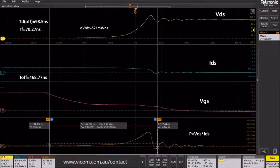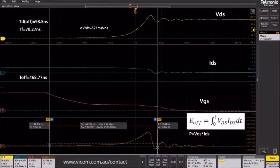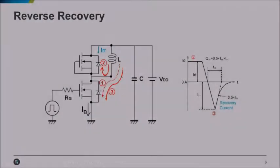Also, the turn off time can be found using the cursor function and energy loss calculated with the integral function. The final measurement is the reverse recovery losses.